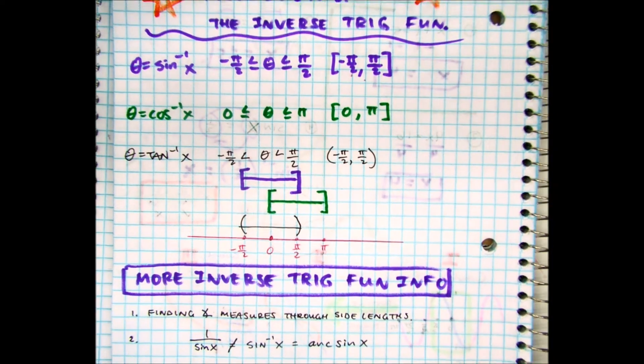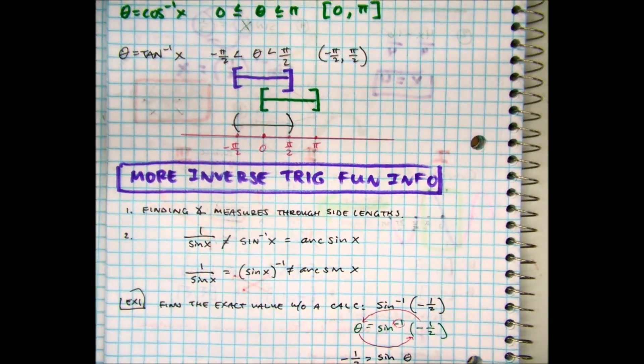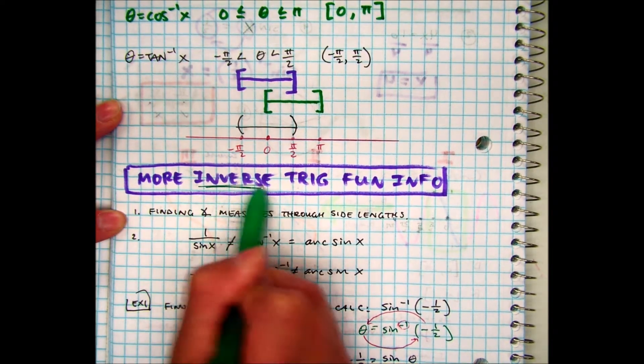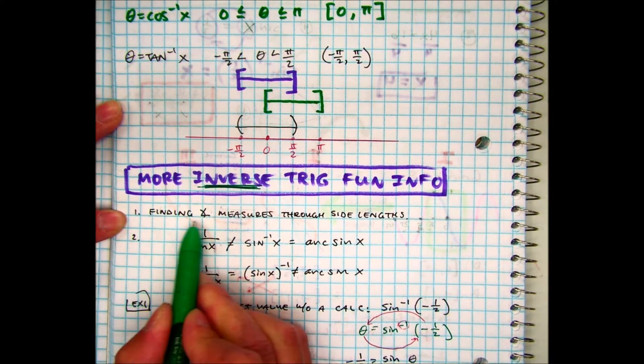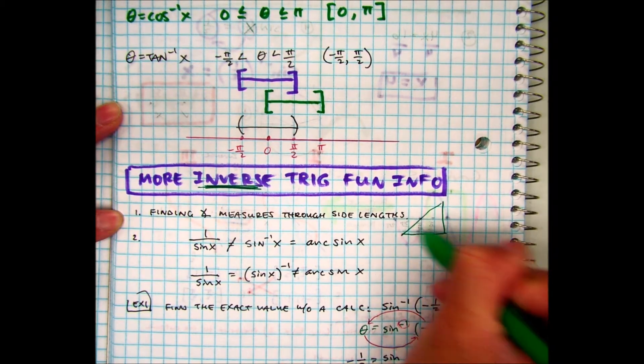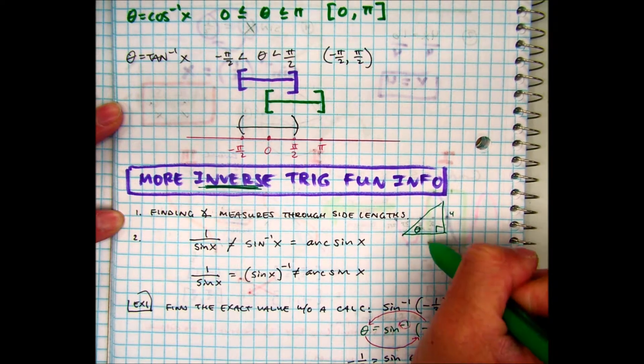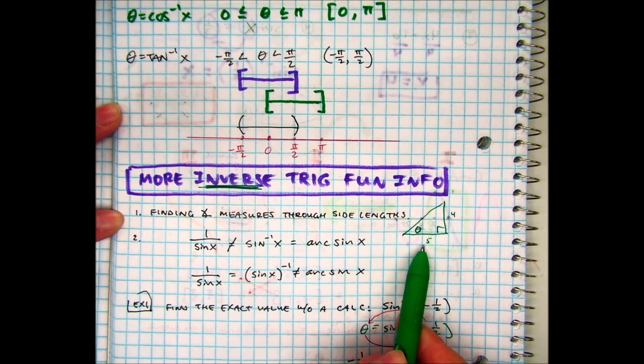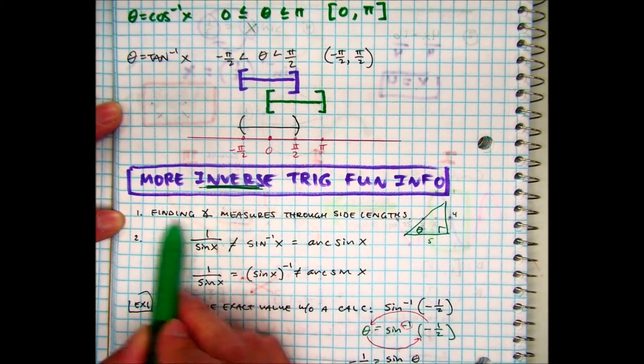Now, let me go ahead and talk to you about some more trig function information. So what's the big idea about finding the inverse? Remember, you're finding an angle measure through side lengths. Some of you guys are doing this on your projects. You have a right triangle, you have an unknown angle, and you're trying to find this angle with the side lengths, right? And then you can just use sohcahtoa, and then you can use inverse. The inverse helps you find an angle.